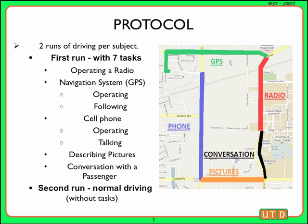Every subject was asked to drive around this route twice. During the first run, they were asked to perform the following secondary tasks. Firstly, the subject was asked to tune the radio to predetermined stations. Then they were asked to operate and follow instructions on a navigation system like a GPS. Then they were asked to dial a number to an automatic airline information system and request information during the call. Then the driver was shown pictures by the author who was sitting in the passenger's seat and were asked to describe the pictures. This was done to approximate the task of looking at objects outside the car such as billboards, signboards, and shops.